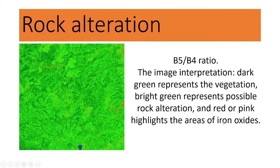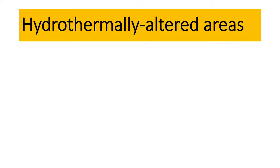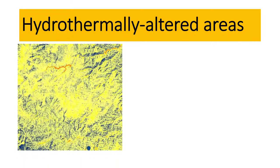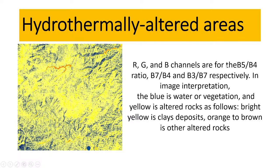Red and pink highlight areas of iron oxide — you can see the red color identifying iron oxide. For hydrothermally altered areas, using the ratio with red, green, and blue channels for B5/B4, B7/B4, and B3 — the blue is water or vegetation, yellow is altered rocks, bright yellow is clear deposit, and orange to brown indicates other alternate rocks.